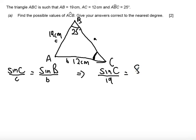So substituting in our values I get sine of C which is the angle I'm trying to find over 19 equals sine of B which is 25 degrees over 12. So I'm going to rearrange and I'm going to times both sides by 19.